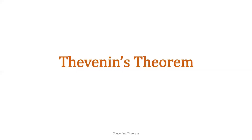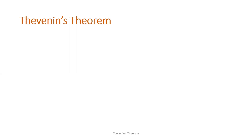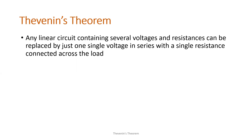Today, let's discuss Thevenin's Theorem. Other people read this as Thevenon — it's up to you if you want to read it as Thevenin or Thevenon. This one is the name of a person. Thevenin's Theorem says that a linear circuit can be represented by a single voltage source in series with the corresponding equivalent resistance of that linear circuit.